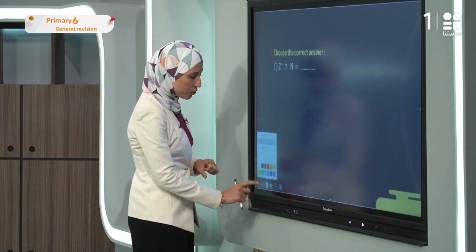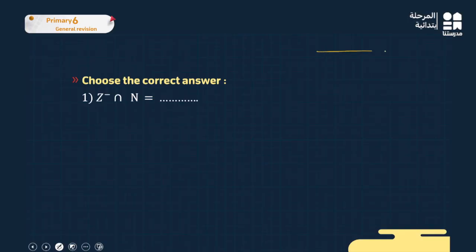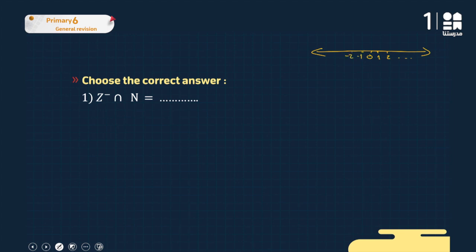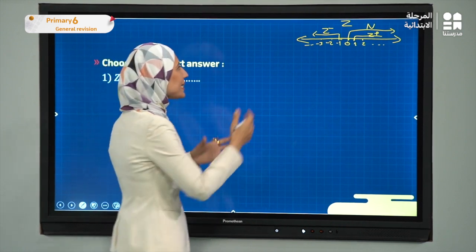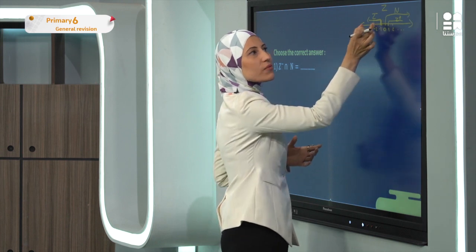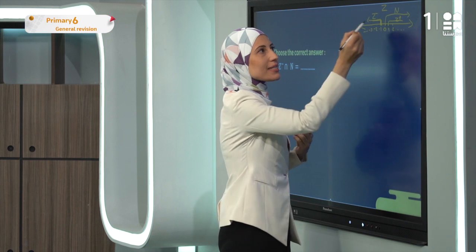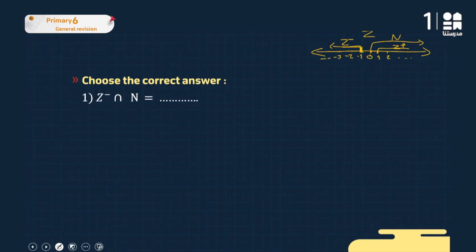I'll draw a quick number line. In the set of integers, zero is in the middle. To the right I have positive integers: 1, 2, and so on — that's N. To the left I have negative integers: -1, -2, -3, and so on — that's Z-negative. So Z-negative starts from -1, and N starts from zero.